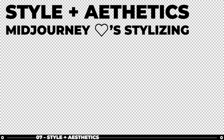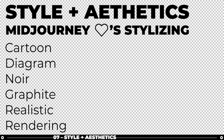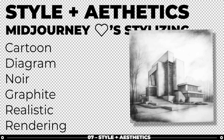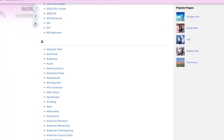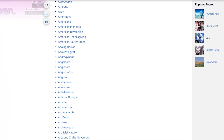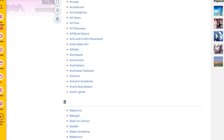Style and Aesthetics: Midjourney is very good at stylizing an image. Use words like cartoon, diagram, noir, graphite shading, realistic, or architecture rendering — maybe ornamental gothic, or any other artistic style you'd like to apply to your image. It's very helpful to know what type of aesthetic you're going for. I've linked in the description and in the Midjourney Cheat Sheet a link to an extremely useful wiki page that has a very long list of aesthetics and different styles that you can use.